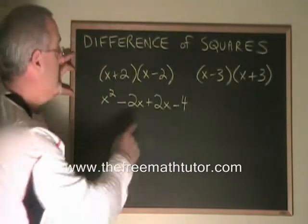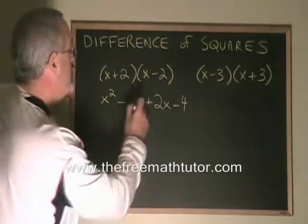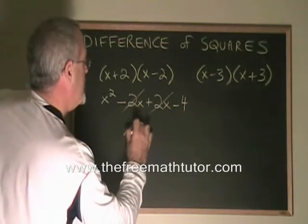What happens is these two middle terms are equal in size and opposite in sign, so they cancel. And all that's left is x squared minus 4.